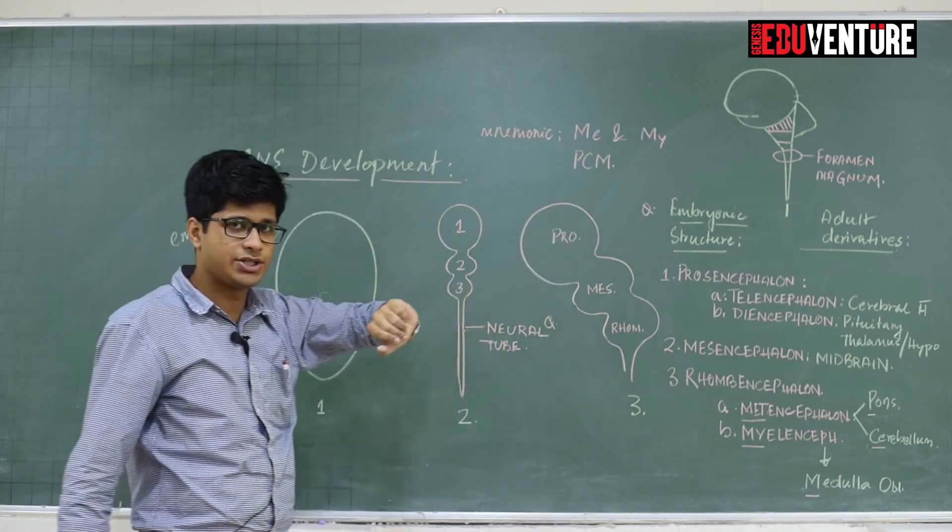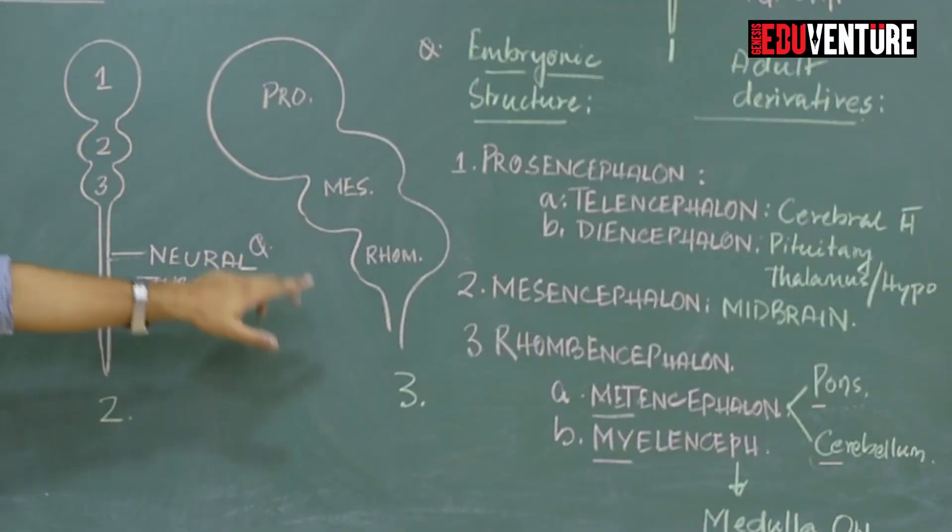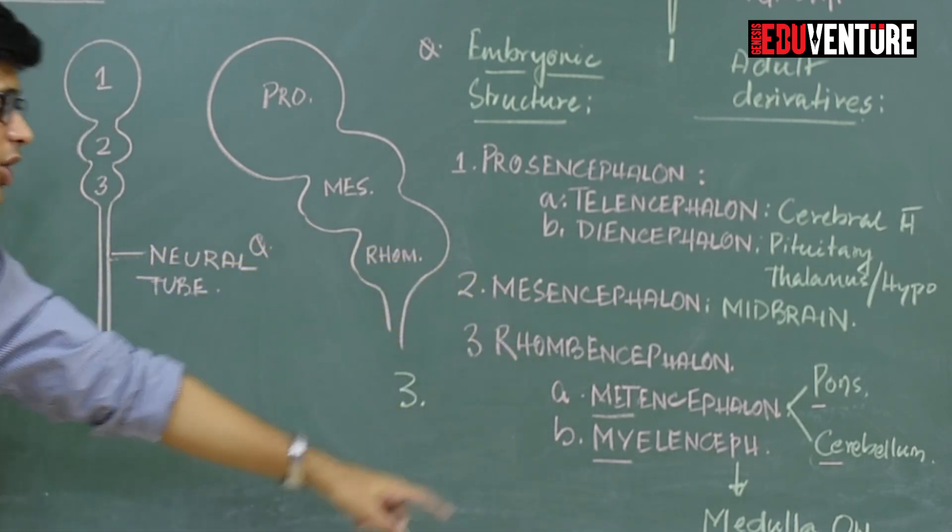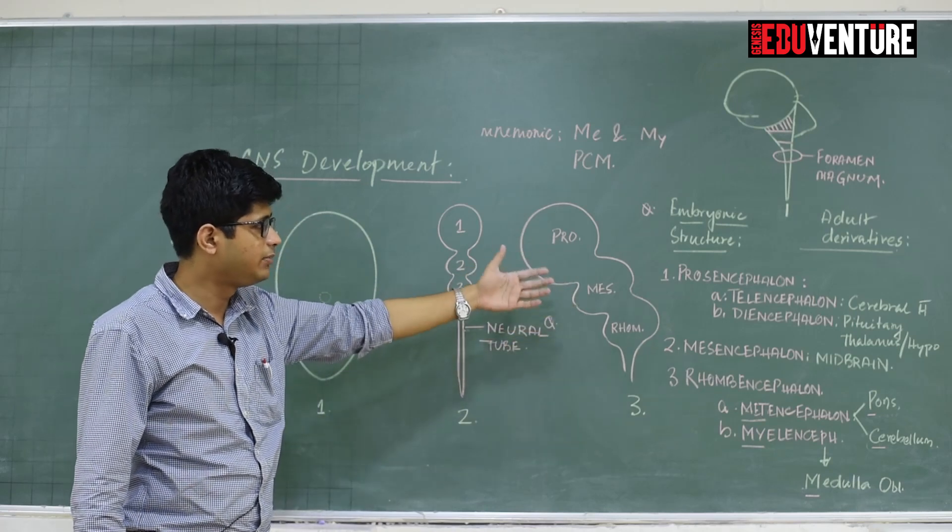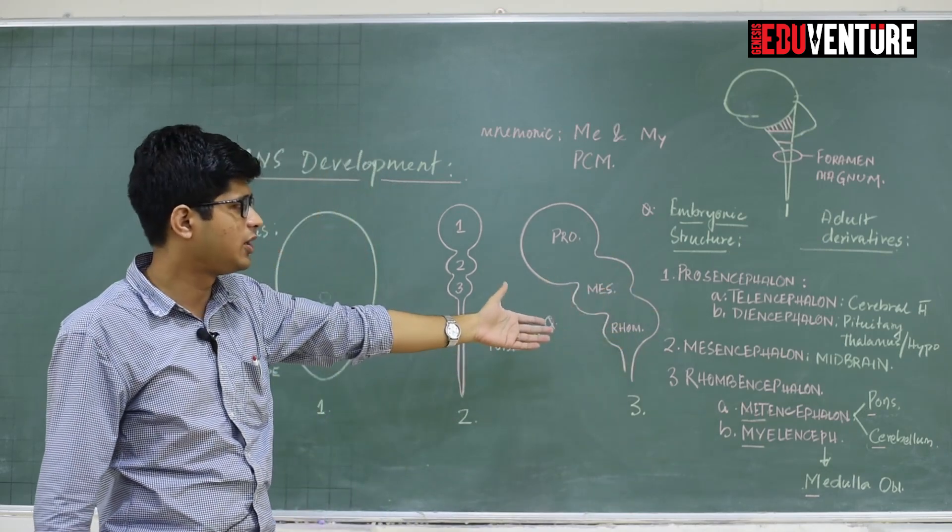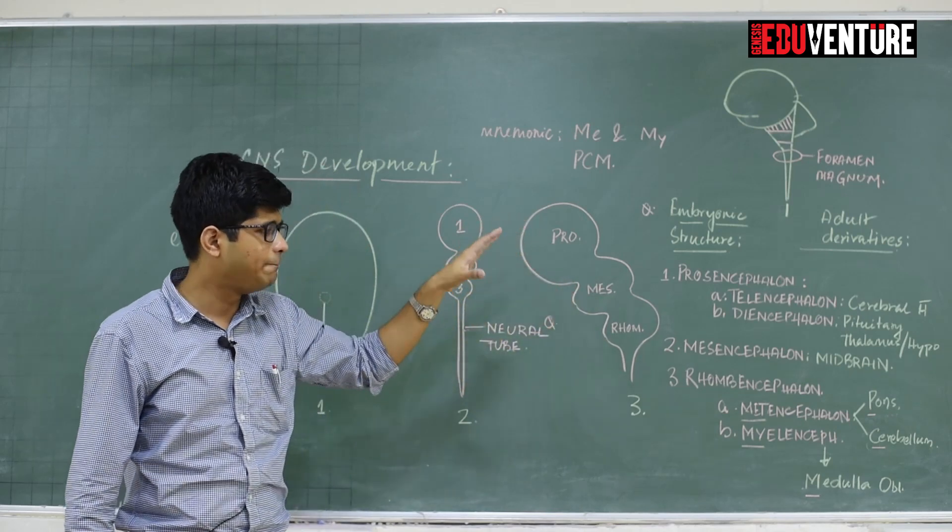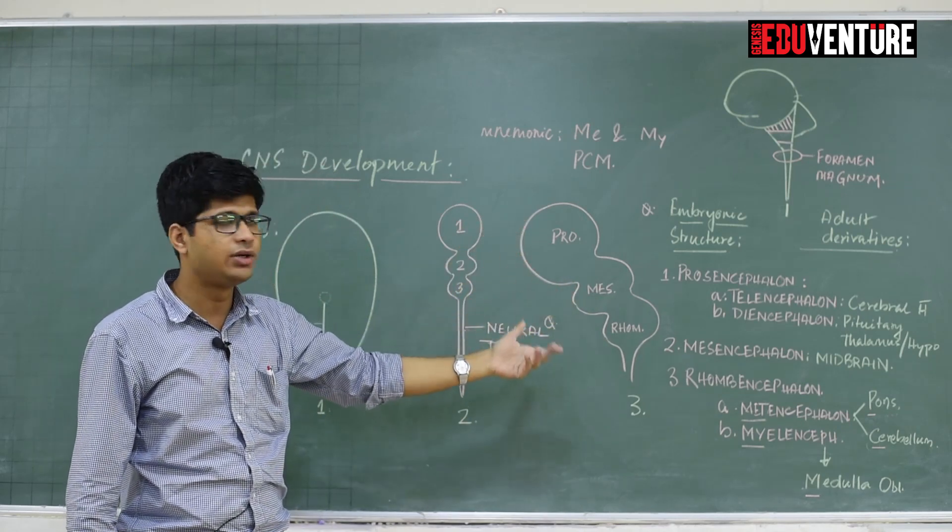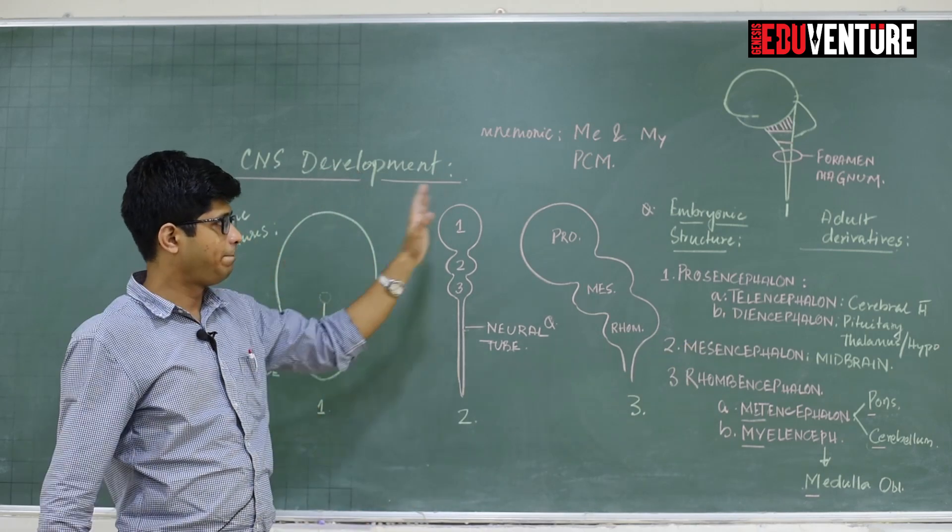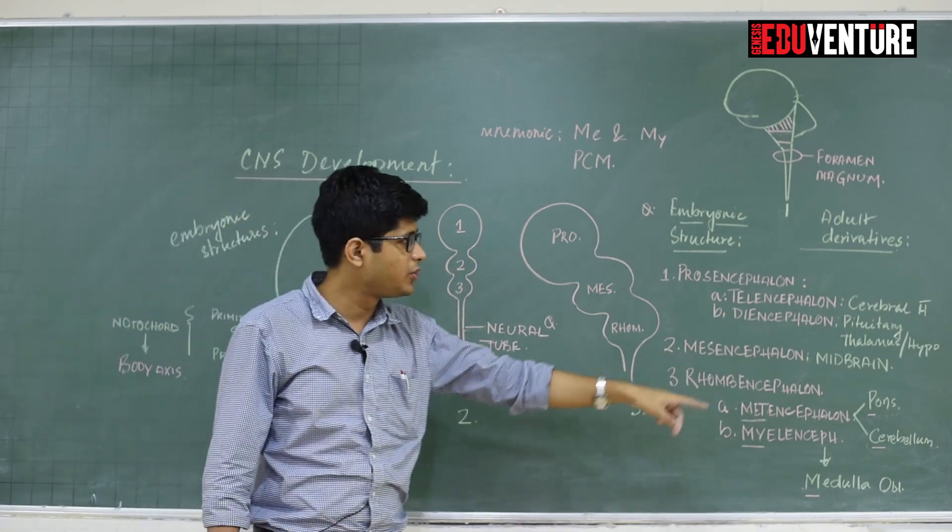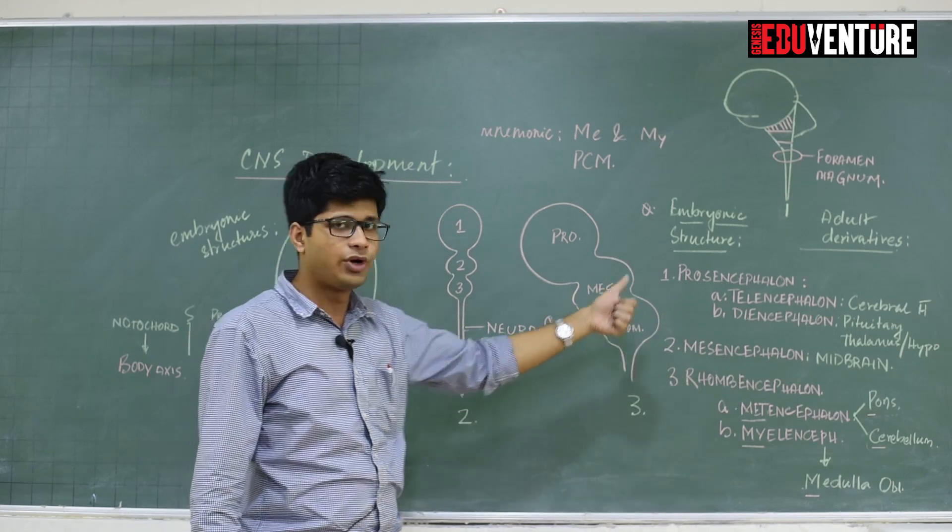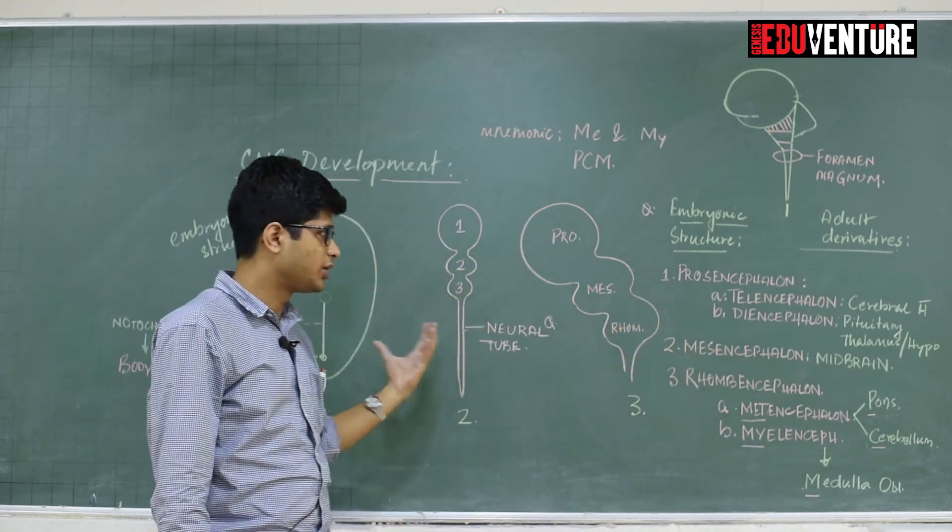Let's start with the first dilatation: pro, mes, and rom. Pros is the prosencephalon, mes is the mesencephalon, and rom is the rhombencephalon. There are three basic dilatations forming three basic structures of the adult brain. These terms are very confusing. I will make you understand and remember in a way that you will never forget because these are pertinent questions. This is going to be the table that you need to know and revise just before the day of the exam.